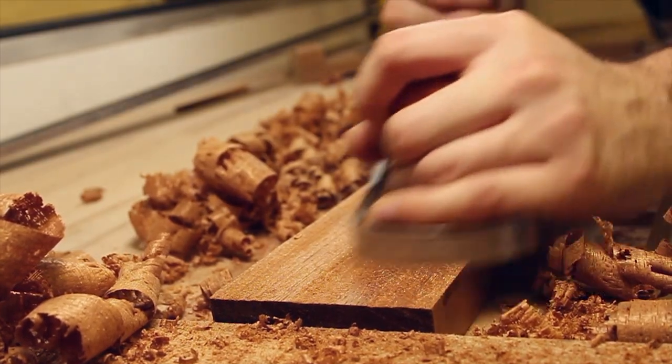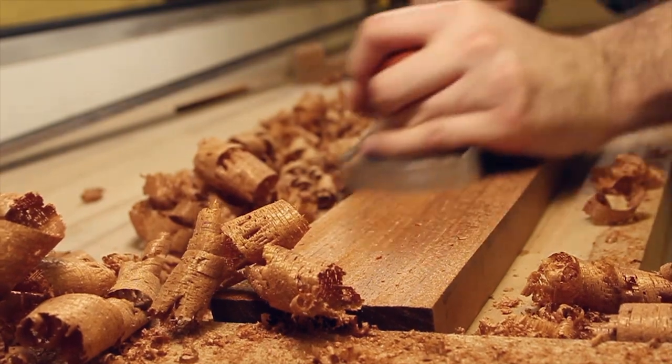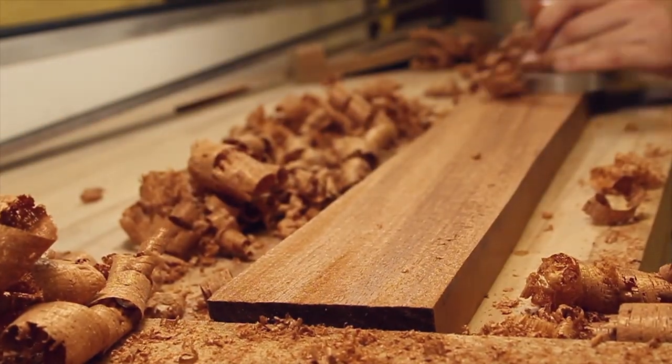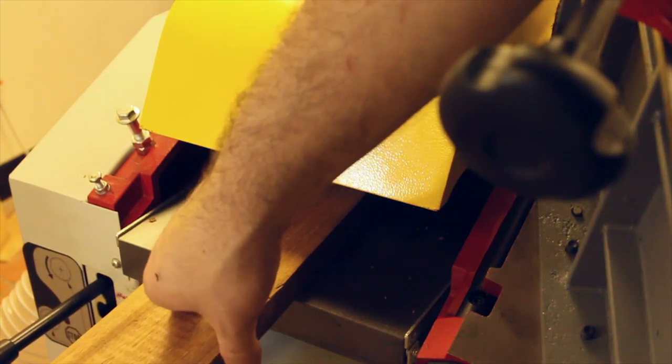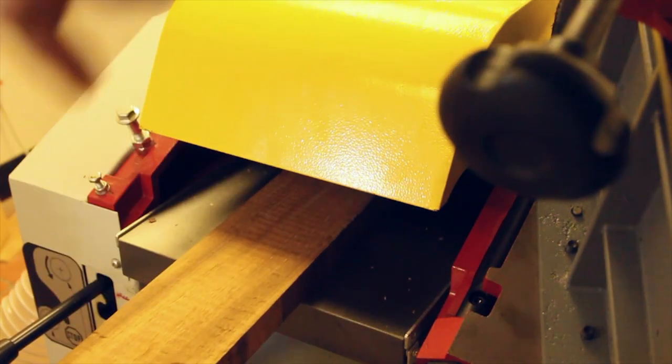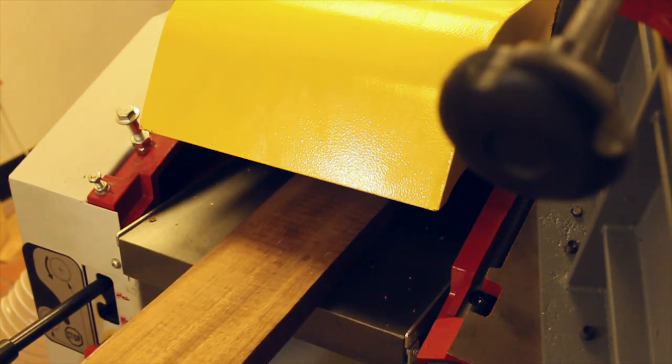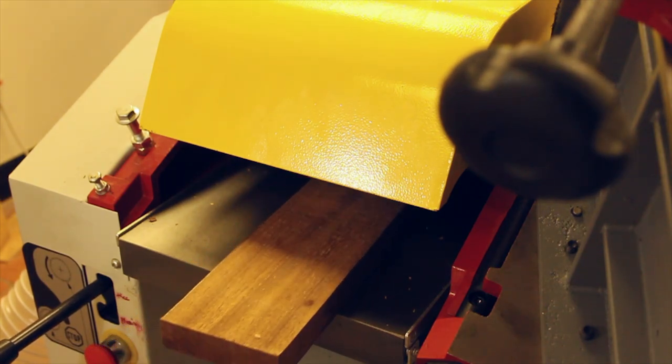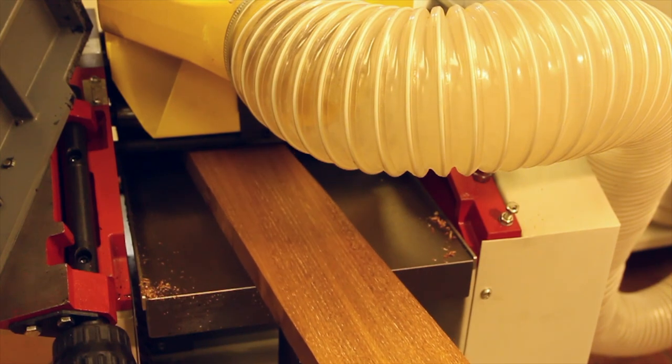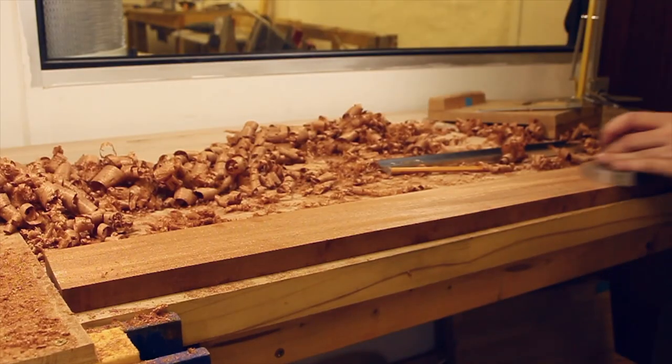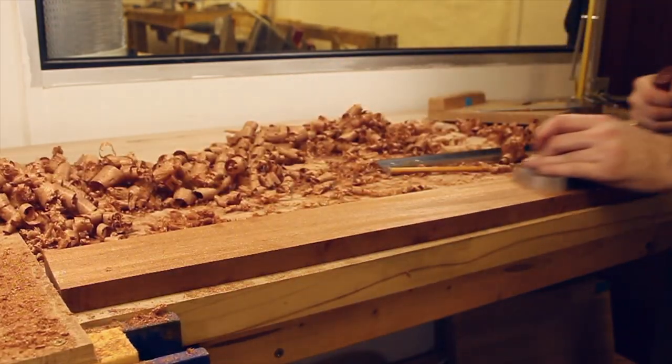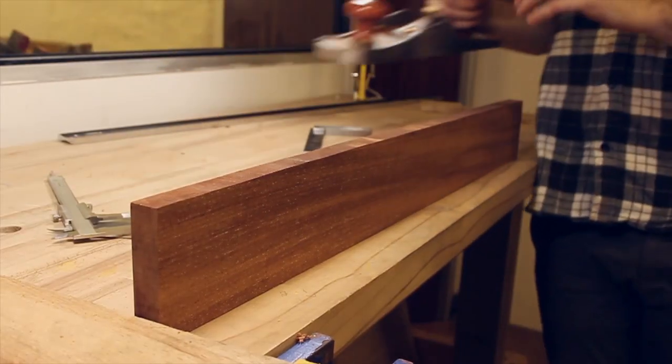Before putting the neck through the thicknesser, I like to make one face flat with a hand plane. The thicknesser tends to snipe at the end of the blank, so I then plane the final millimetre off by hand.